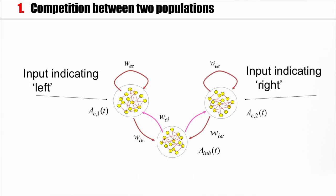So if one of the populations is active, it sends strong signals to the inhibitory population, which in turn sends signals to the other one. So that this population, if it has strong activity, will effectively suppress the other population.